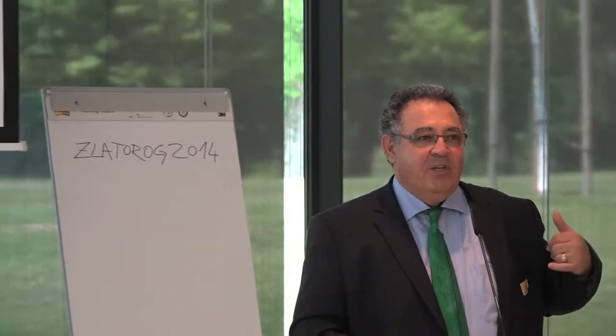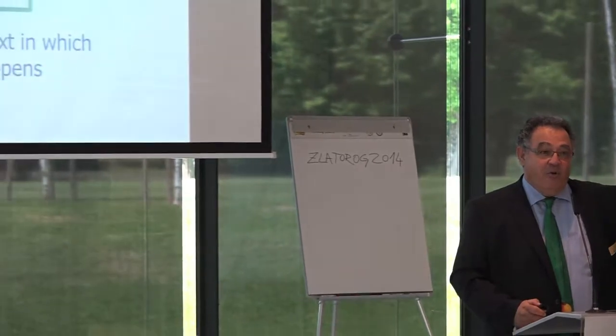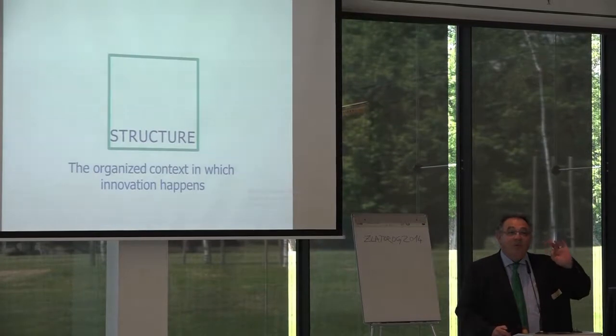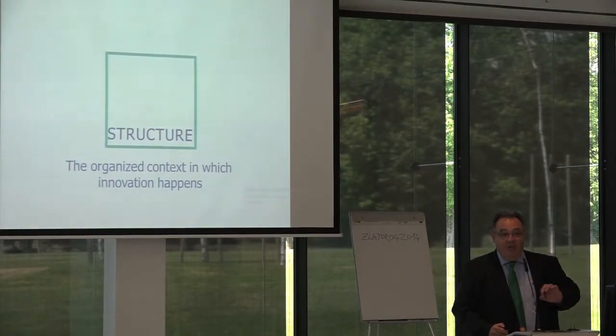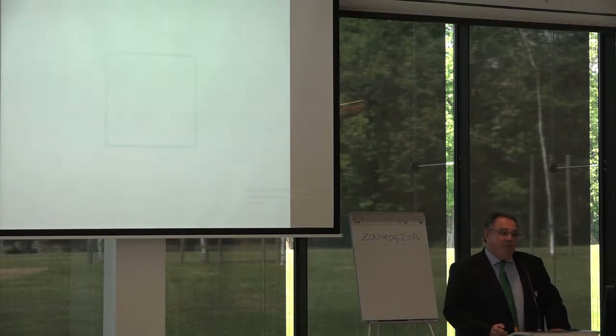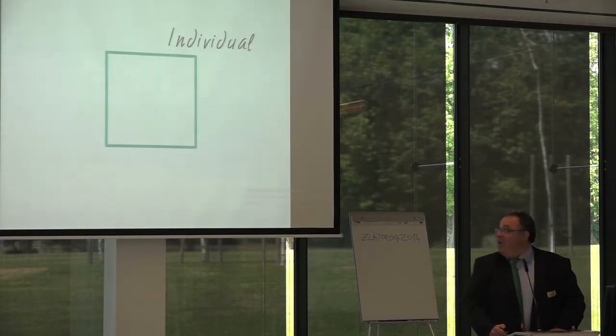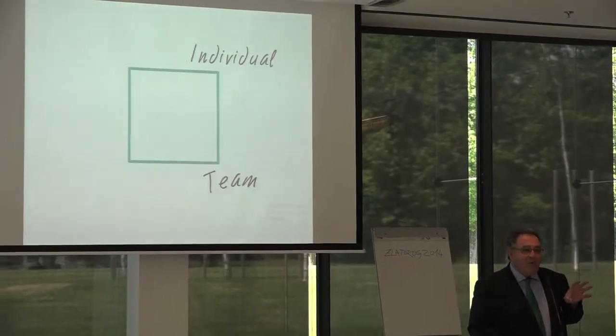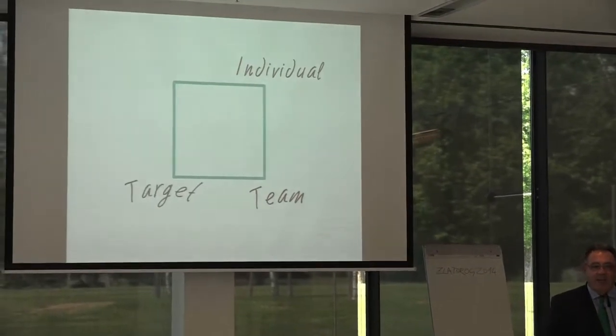Then there's the square. The square represents structure — the organized context in which innovation happens. Remember, we're talking about organizations here. We're not talking about a man or a woman sitting on a rock looking at the waves writing beautiful poetry. That's creativity too, but we're talking about creativity in organizations. The structure is represented by four elements: two of them are human — individual and team — and the other two are more about process: target and system.